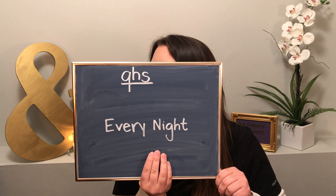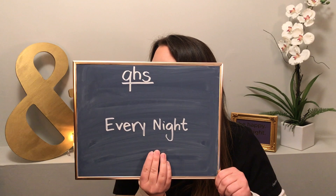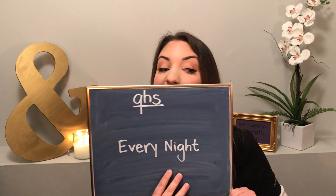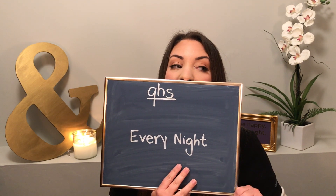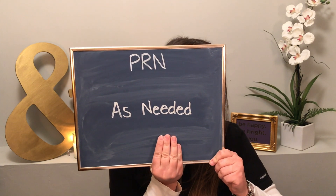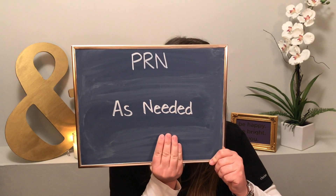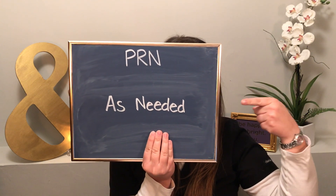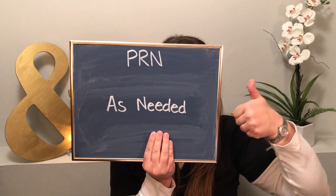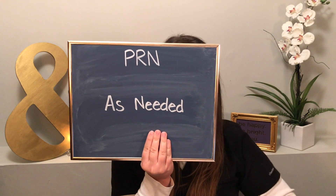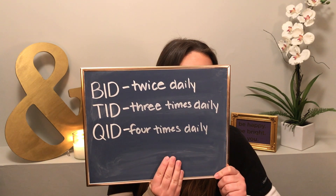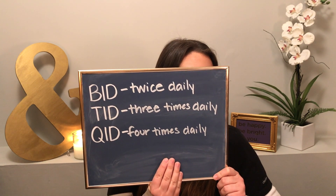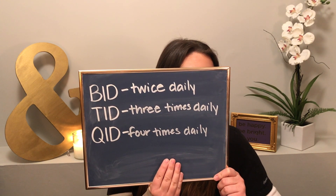The next one is also one you're not supposed to use - it's QHS and that means every night. You can tell with the Q that means 'every' for every single one of these. The next one is one of my favorites: PRN, and that means as needed. Say you are using a lotion and we want you to use it as needed for dry skin - we would just write PRN. The next ones are BID, TID, and QID. The first two are pretty easy - you can think of BID as a bicycle, so twice daily.